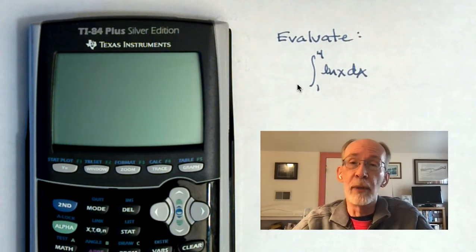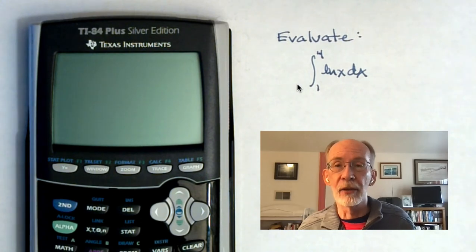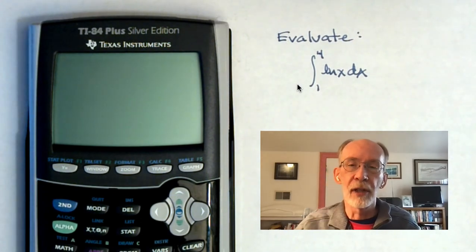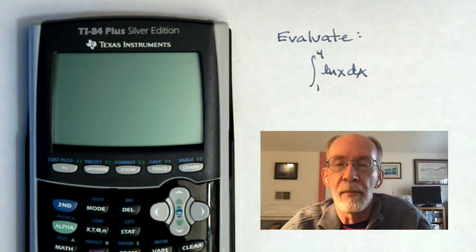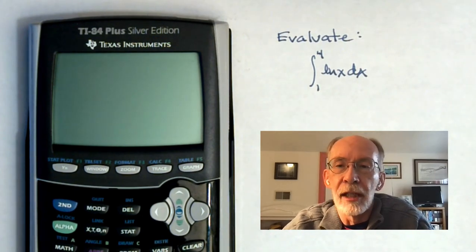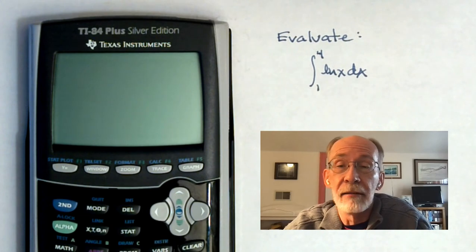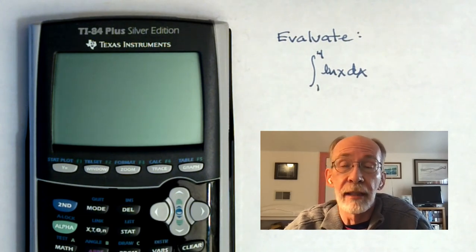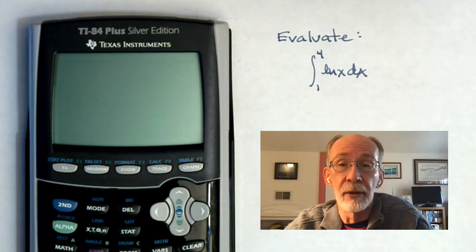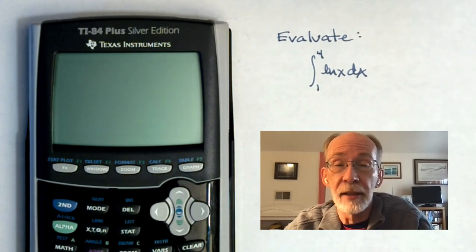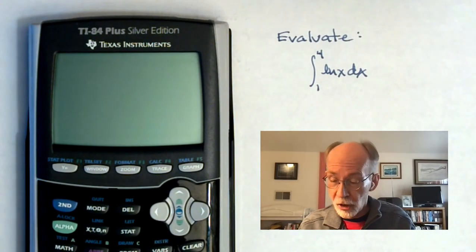So, real quick example. We want to evaluate the integral from 1 to 4 of the natural log of x dx. If you are a calculus AB student, as are my students, you're not going to know how to anti-differentiate that. It requires a technique called integration by parts. But even if you know how to find the antiderivative and use the fundamental theorem to evaluate the integral, you may have been asked to find a specific Riemann sum estimate.